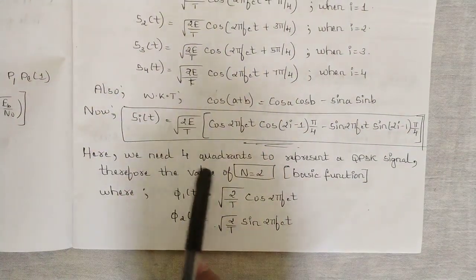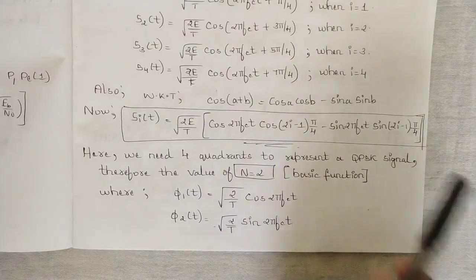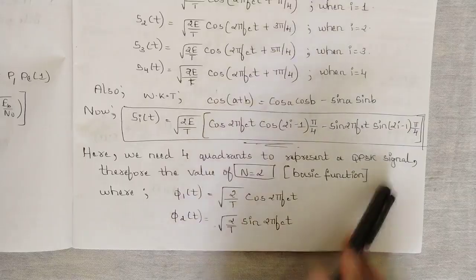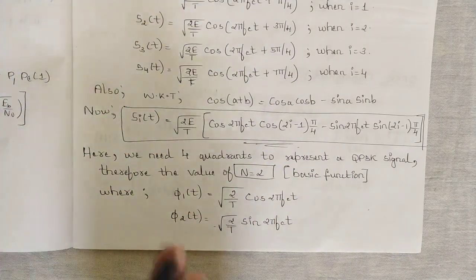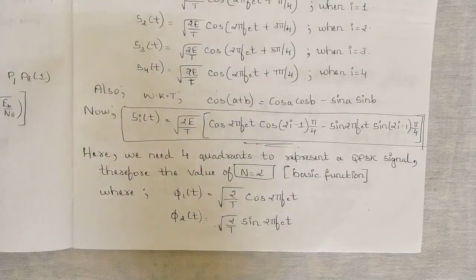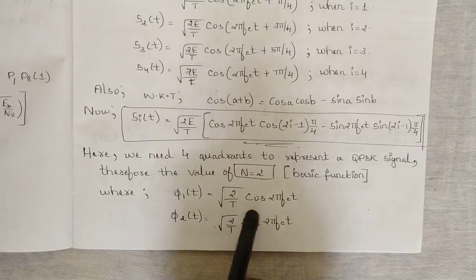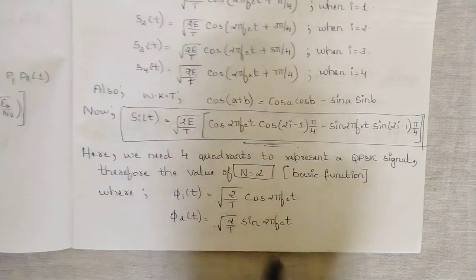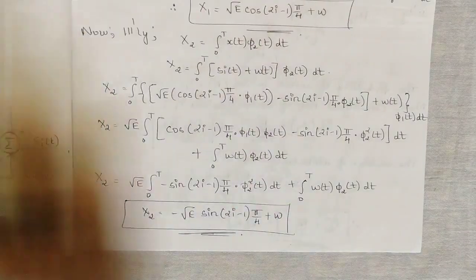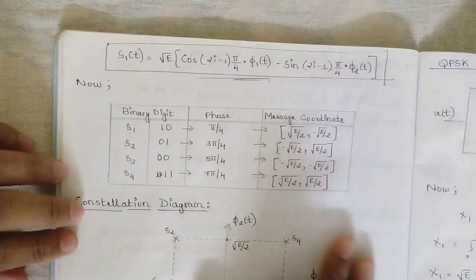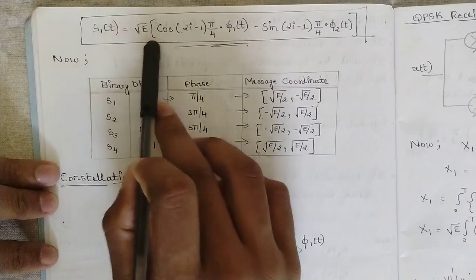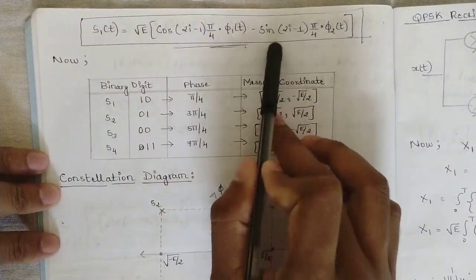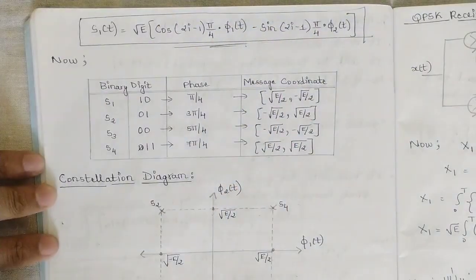To represent a QPSK signal we need four quadrants, so n = 2 basis functions: φ1(t) and φ2(t). In BPSK we had only one, but in QPSK we use two. φ1(t) = √(2/T)·cos(2πfc·t) and φ2(t) = √(2/T)·sin(2πfc·t), since they are opposite in phase. The signal si(t) is then expressed as: si(t) = √E·cos((2i−1)π/4)·φ1(t) − √E·sin((2i−1)π/4)·φ2(t).